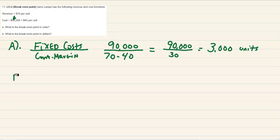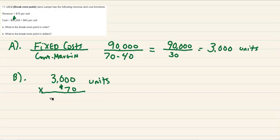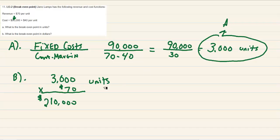Part B wants you to know the break-even point in dollars. Real simple — we've already figured out the units we need to make to break even. To get the dollar amount, we just take those units and multiply by the price per unit. When we multiply that out, we get $210,000. So our BEP in units is 3,000 units, and our BEP in dollars is $210,000. Just remember your formula, remember how to get your contribution margin, and you can calculate the break-even point all day long.